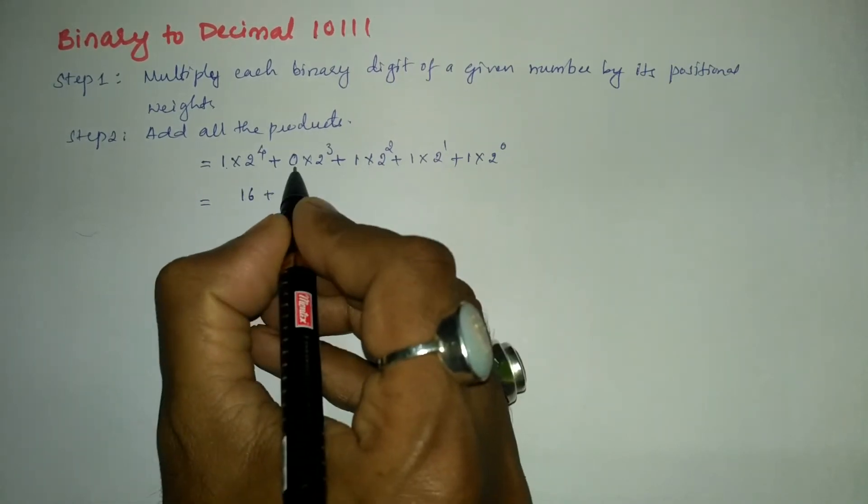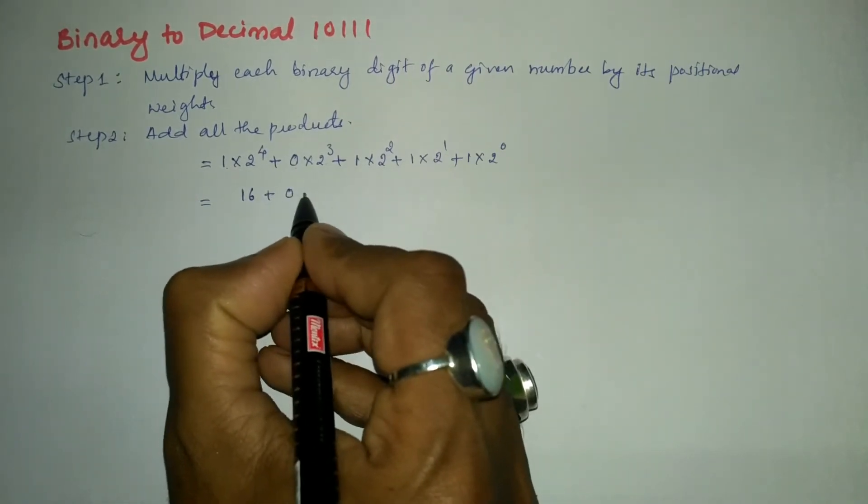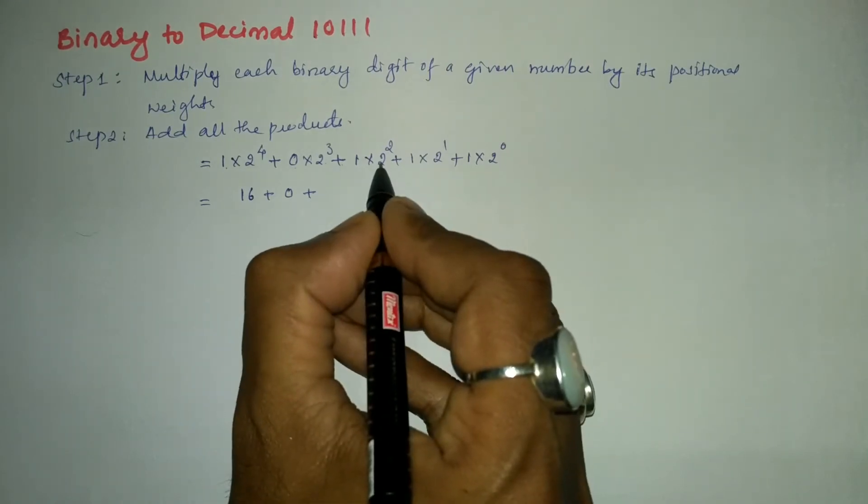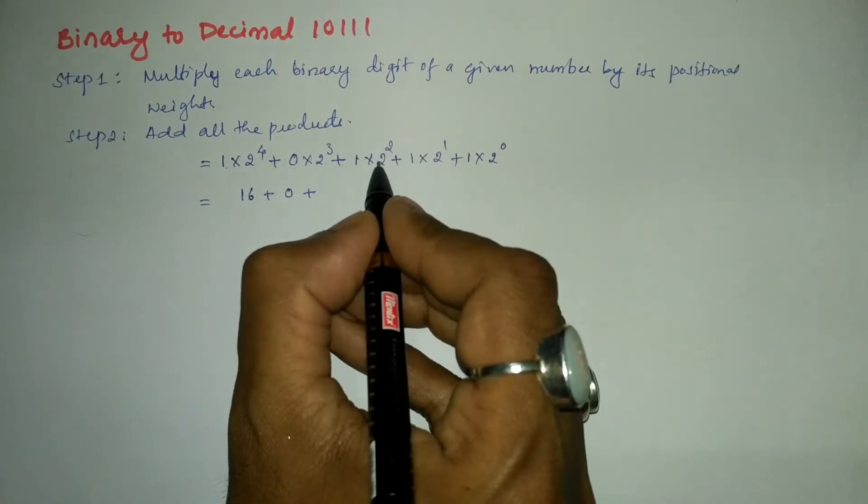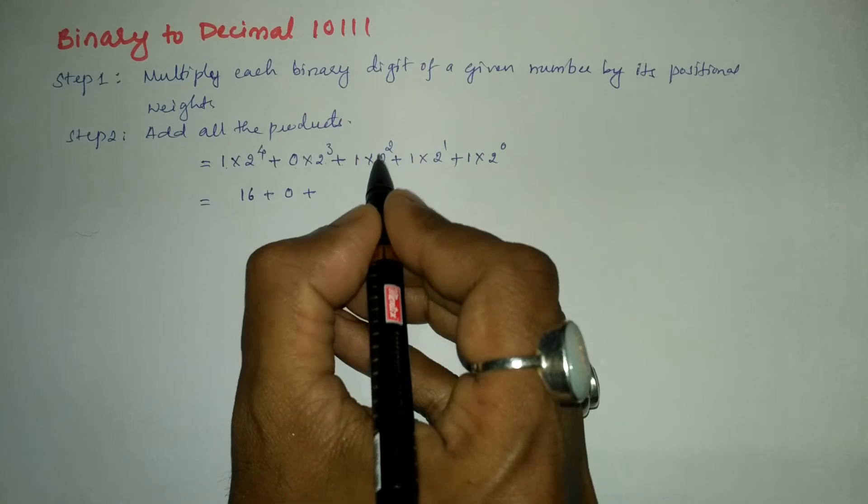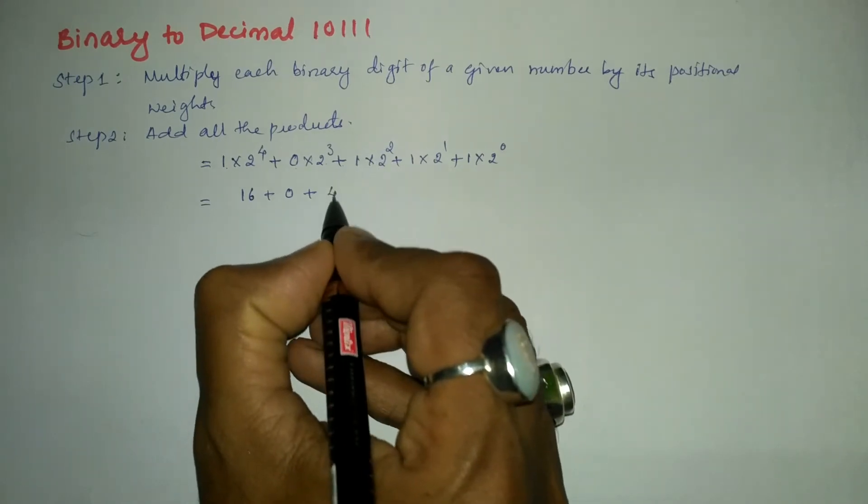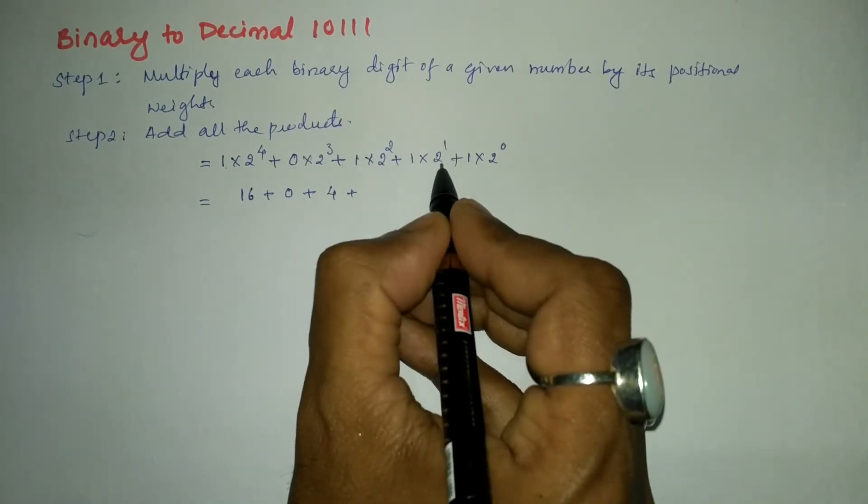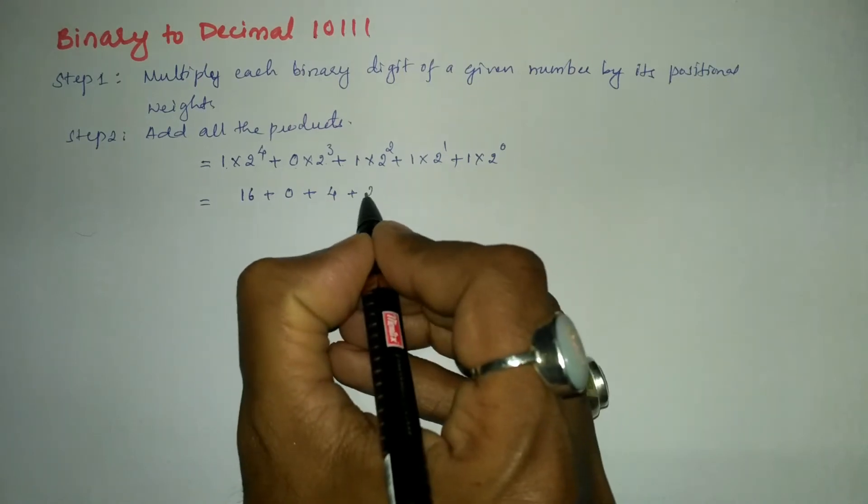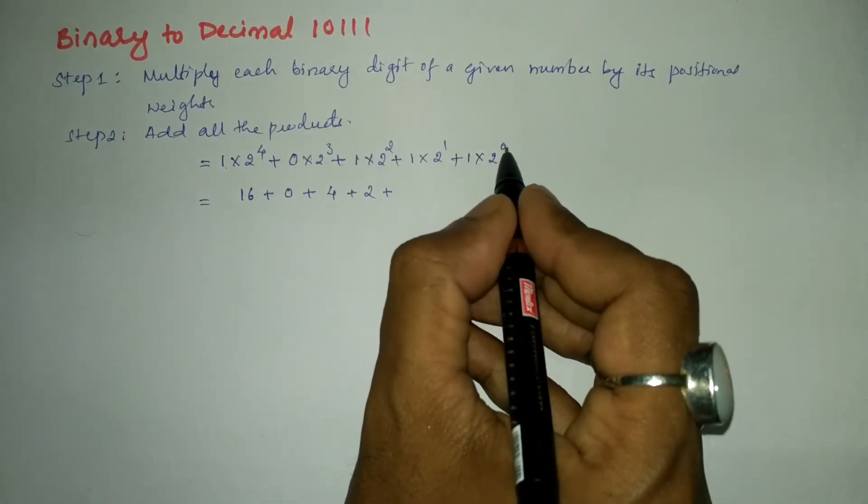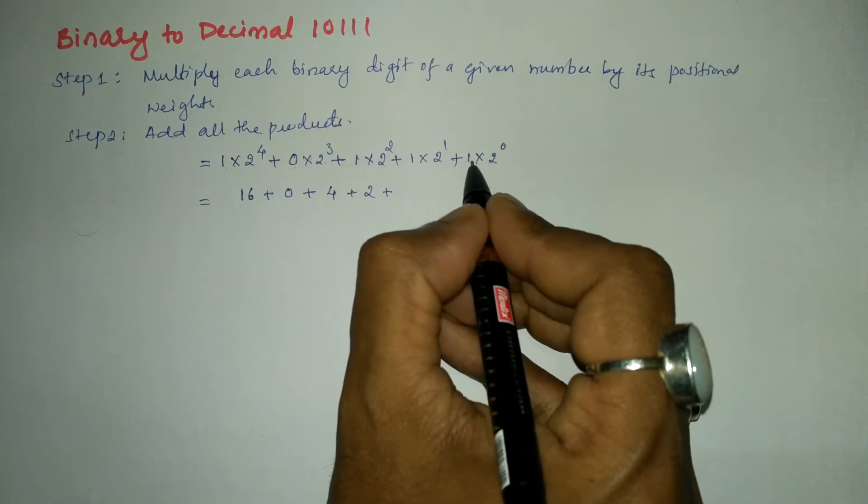Plus zero into anything is zero. Plus, as it is, two to the power two is two is to be multiplied twice: two to the four, four ones are four. Plus two to the power one is two, two ones are two. Plus two to the power zero, anything raised to zero is one, one into one is one.